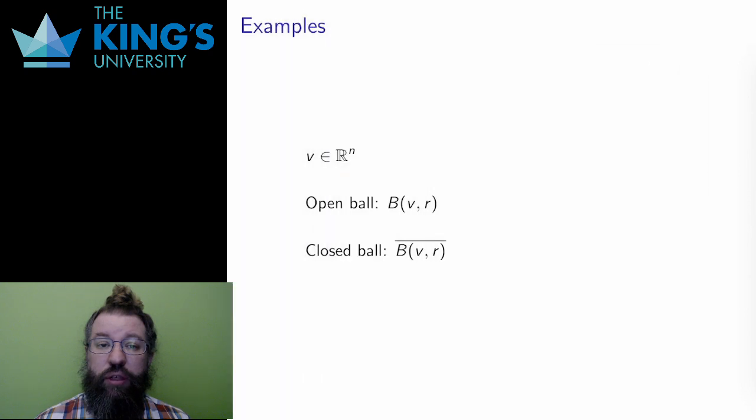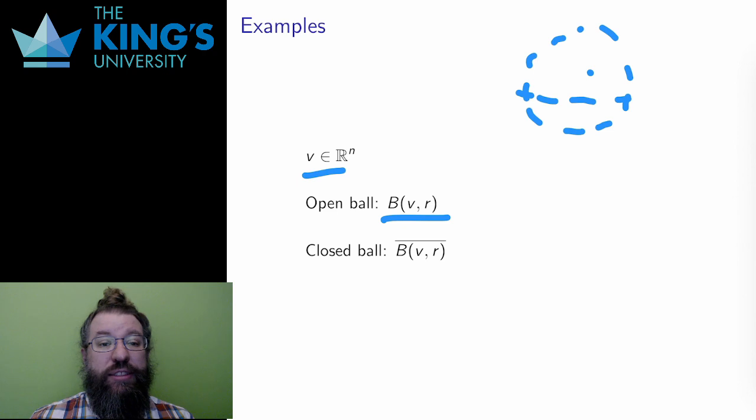In addition to intervals, there are also open and closed balls in R^3 or in any R^n. These are also generalizations of intervals on the number line. So if V is a vector in R^n, then the open ball about V of radius R is the sphere, or higher dimensional version of the sphere, centered at V with radius R. And it is a solid sphere, not a hollow sphere.